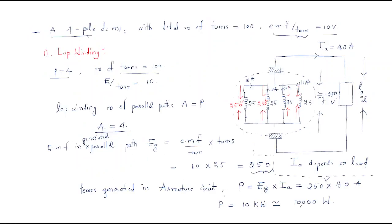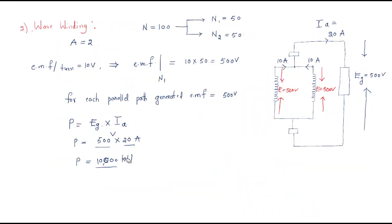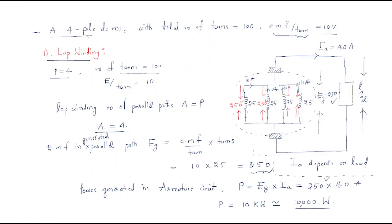In lap winding, the power is also 10,000 watts, or 10 kilowatts. So the power generation from lap winding and wave winding are both the same — there is no change in the total power generated.